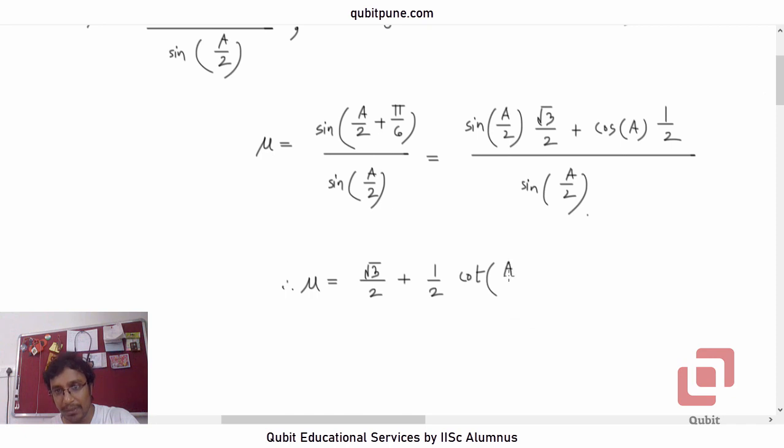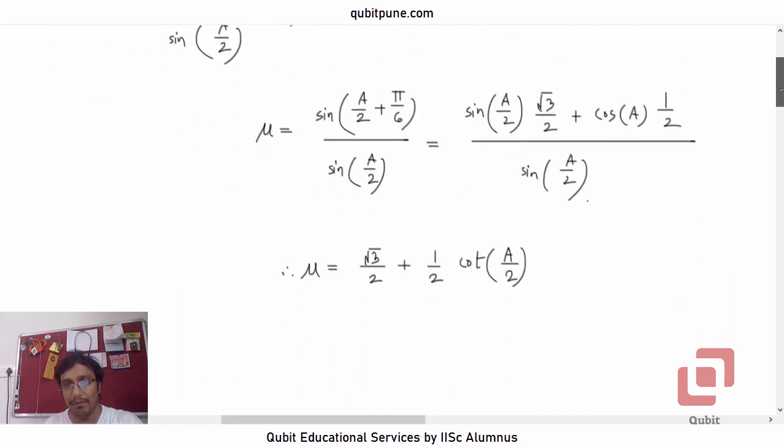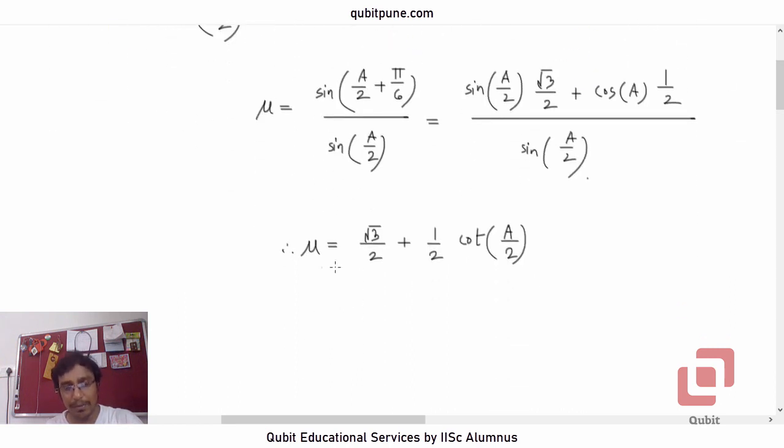Because the only trigonometric ratio that is remaining here is the cotangent ratio. Everywhere you have cot. Continue simplifying.